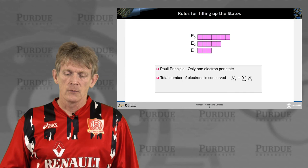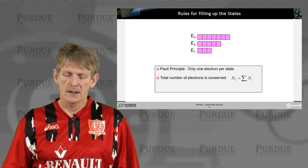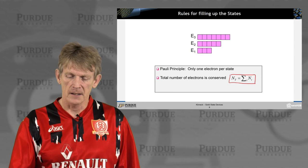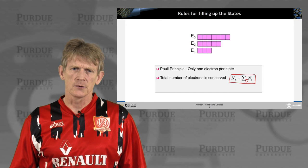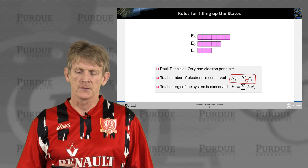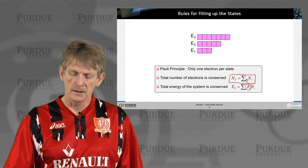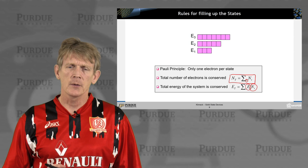We're also going to conserve the total number of electrons in the system — the total number of electrons sums over all the electrons in the various states i. We're considering three energy levels, each with individual states associated with them. Finally, the total energy of the system needs to be conserved: for a given occupancy and energy level, we sum up the total energy in the system, and that needs to be conserved.